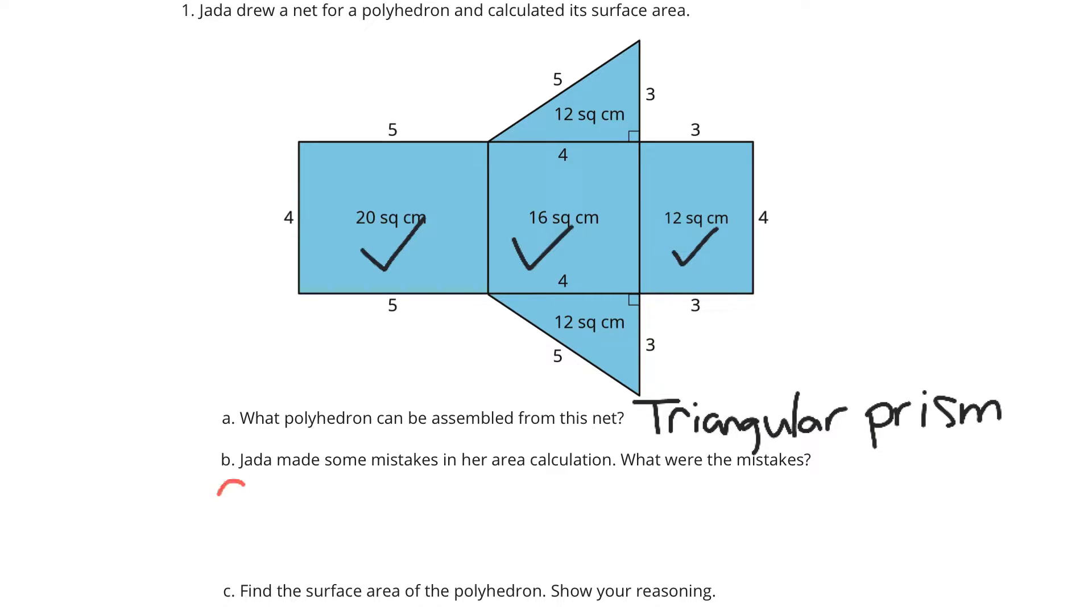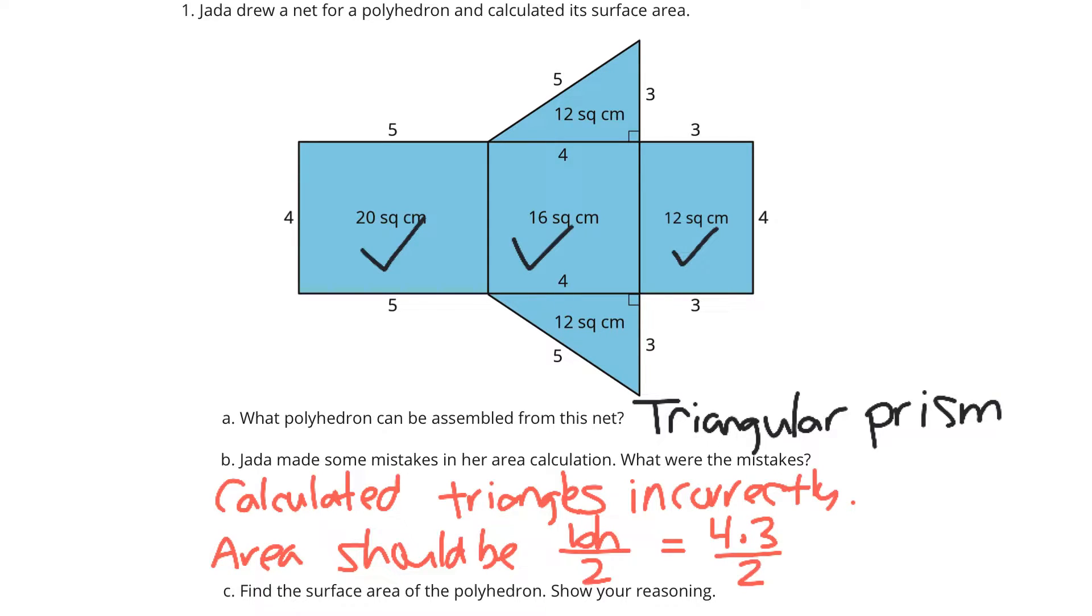She calculated the triangles incorrectly. Area should be base times height divided by 2, which would be 4 times 3 divided by 2. So 12 divided by 2, which is 6 square centimeters for each. So we're going to change this to 6 and 6.